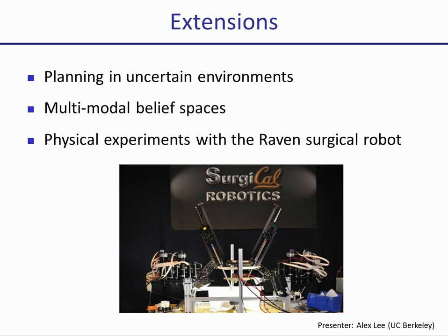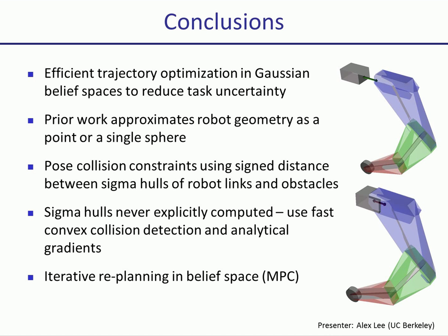An extension we are considering is to plan in a cluttered environment. Also, as shown in this talk and in earlier work on Gaussian belief-space planning, Gaussians, while limited, have proven surprisingly effective. Still, for problems where uncertainty is not unimodal, they wouldn't be the right fit, but a mixture of Gaussians model could be. We also want to execute belief-space trajectories on a physical robot, like the Raven surgical robot. In conclusion, we were able to do Gaussian belief-space planning using efficient trajectory optimization. We formulated a probabilistic collision avoidance constraint using the signed distance between sigma hulls of robot links and obstacles. The sigma hulls did not have to be explicitly computed, so our method is very efficient, and we use fast convex-convex collision detection and analytical gradients.